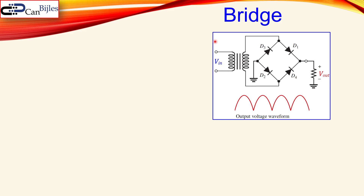Before we move on with our example, I will briefly illustrate the topologies for our full-wave rectifier. One of them is the bridge — we have here four diodes instead of one as in the half-wave rectifier. The input is connected through the transformer to this bridge configuration and then to the load, which is in this case pure resistive. If your input is a pure sine wave, your output will be the absolute value of your input voltage.